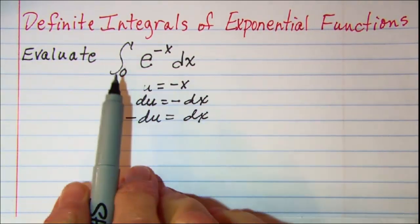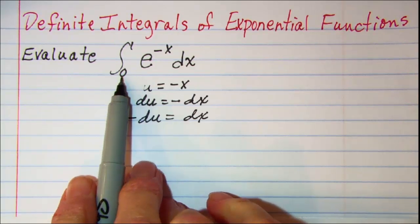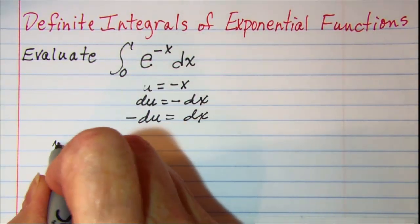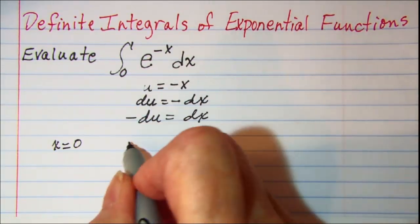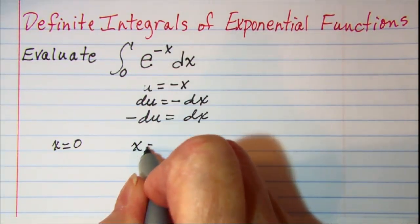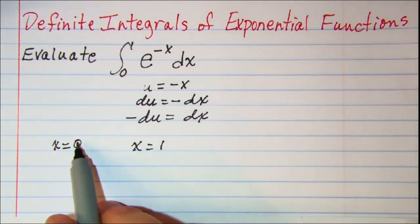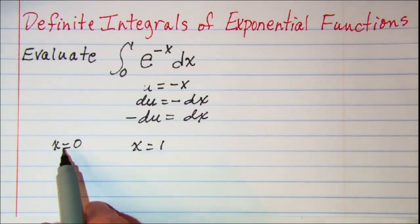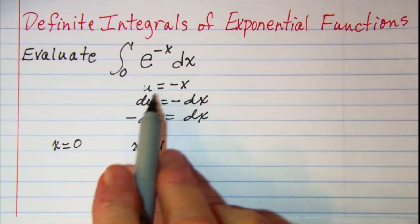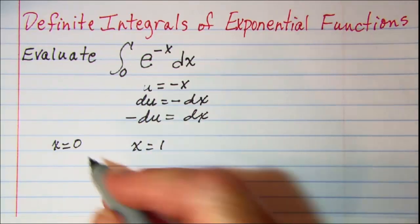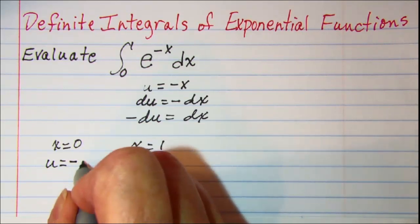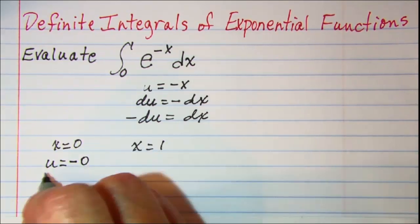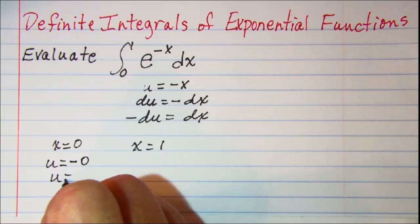On this problem we have a lower limit x equals 0 and an upper limit of x equals 1. To find our u substitution for that, we have u equals negative x, so u equals negative 0, but 0 doesn't have a sign, so u equals 0.